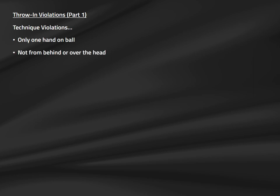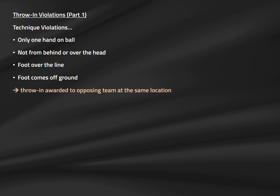The ball returns to play off a throw-in when it breaks the plane of the touch line and is released from the thrower's hands. Technique violations by the thrower result in the throw-in being awarded to the opposing team. These include using just one hand, not bringing the ball from behind the head, having one or both feet entirely over the touch line and in the field of play, raising a foot before releasing the ball, or throwing from the knees. Each infraction results in a throw-in awarded to the opposition at the same location.